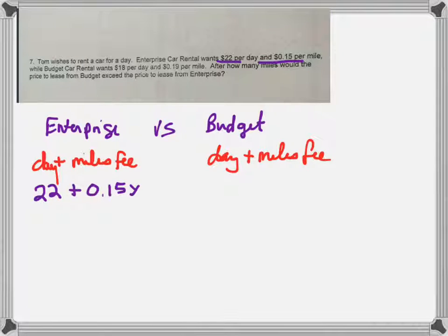Enterprise says it's $22 a day plus 15 cents per mile. I just stuck a variable there, so I really need to define my variable, and the variable then would be the number of miles.